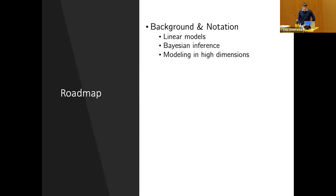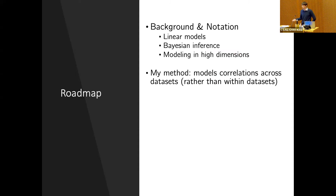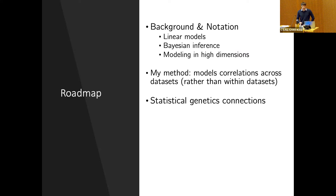Today I'm going to focus on just one story within the category of modeling, where I'm going to show that a new method that I've come up with with my collaborators will perform better in this high-dimensional setting by modeling correlations across data sets rather than within them. As a roadmap, since the contributions I'll be talking about relate to linear models, I'll first start with some background on linear models, as well as Bayesian inference in these models and how these things look in the high-dimensional setting. I'll then discuss this particular method for modeling correlations across data sets, connections to statistical genetics and genetic correlation, fast algorithms for inference, and benefits of this new method with theoretical and empirical support.